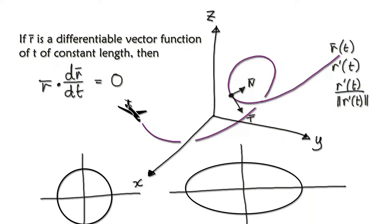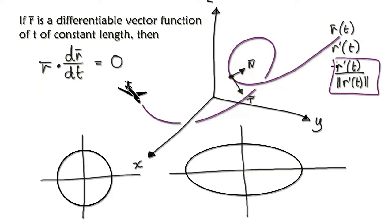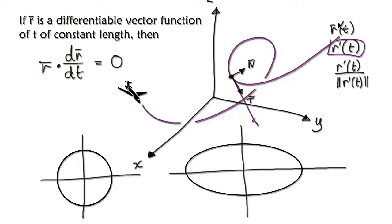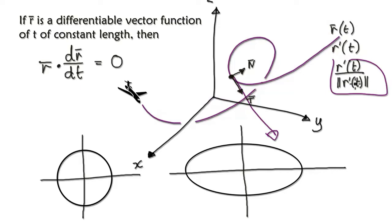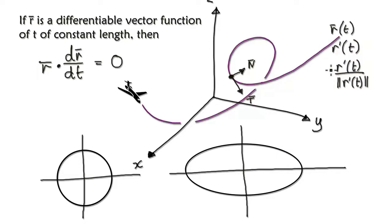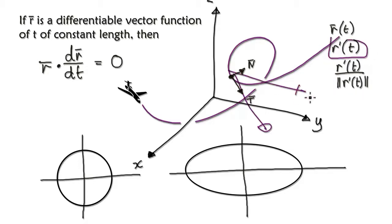Following on from the previous two videos, we were trying to understand why it is that when you differentiate a unit tangent of length 1, it gives you a new vector that is always at 90 degrees. Why is it that differentiating a length-1 vector gives something at 90 degrees, whereas differentiating the general tangent might or might not be at 90 degrees? That's what we're going to address in this video.